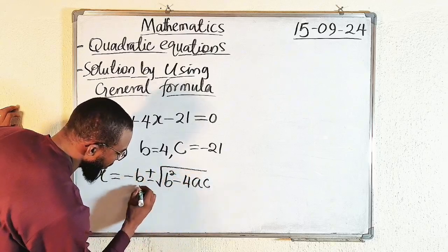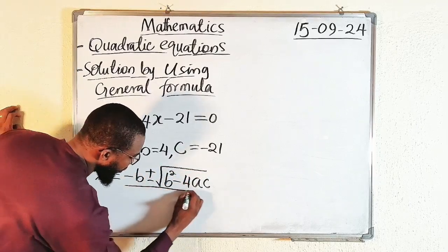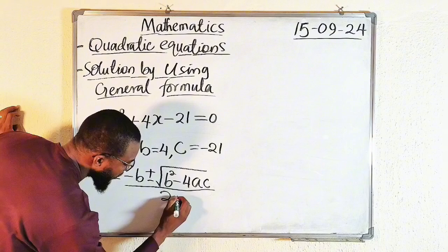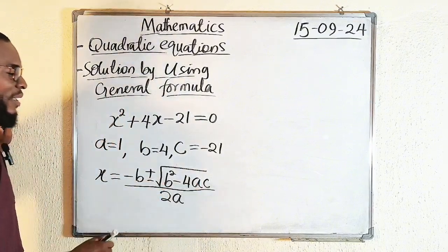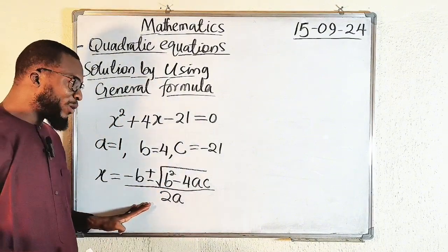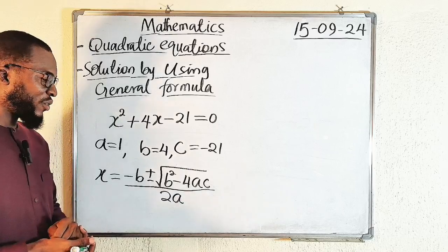This is square root. The whole of this divided by 2 multiplied by the leading coefficient A. So this is the general formula used to solve every form of quadratic equation.